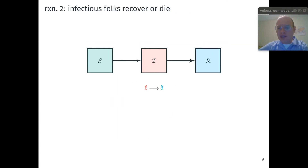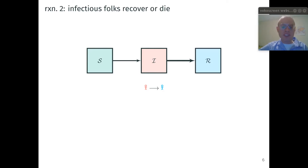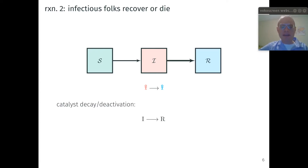The second reaction that occurs in the reactor is when an infectious individual either recovers or dies. We assume that recovery from the disease confers permanent immunity to reinfection. Either way, when that infectious individual recovers or dies, they are removed from participation in disease transmission — they cannot catch the disease, nor can they give it to anyone who is susceptible. This is analogous to when the autocatalyst either decays or converts to a deactivated form R.